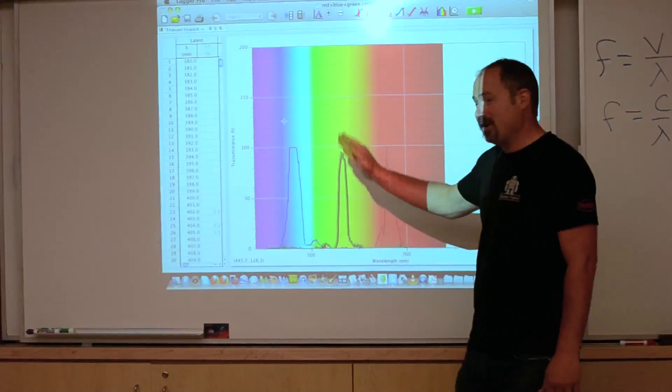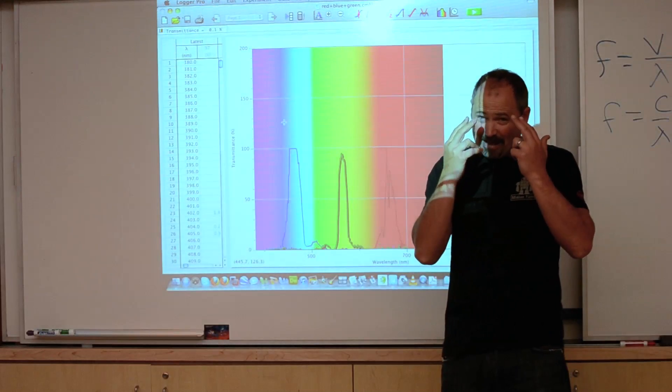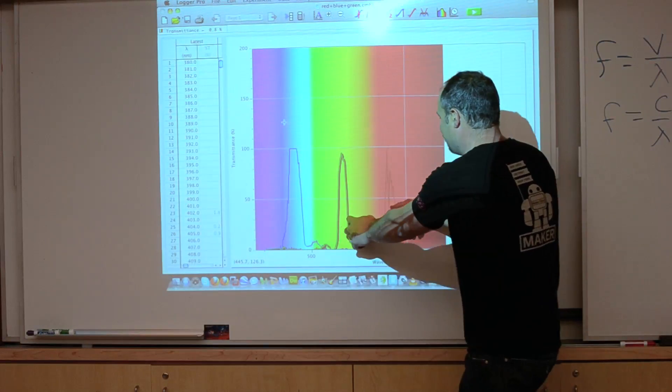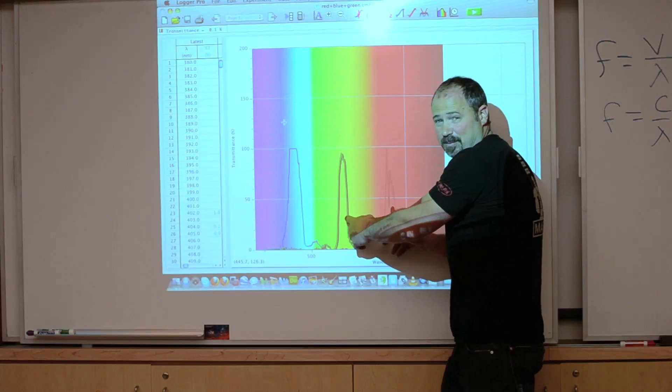There you go. Red, green, and blue. That's all we have in our eyeballs. And then different combinations. If you had red and green, for example, that would make yellow.